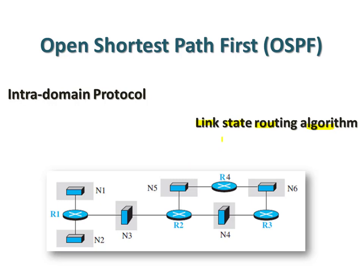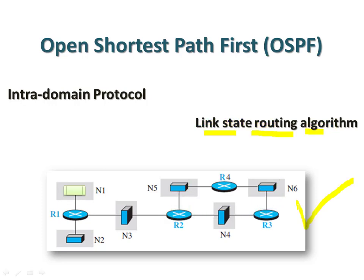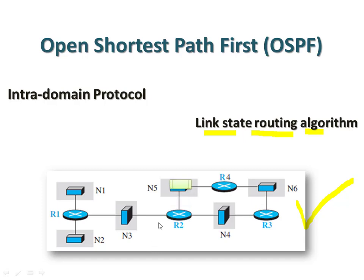In link state routing algorithm, we need to find the least cost path when a packet is to be transmitted from source to destination. Using Dijkstra's algorithm, the least cost tree is determined — that is, the path with the minimum cost value from source to destination.